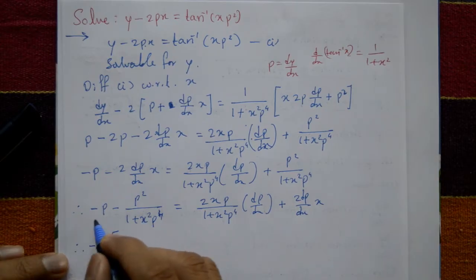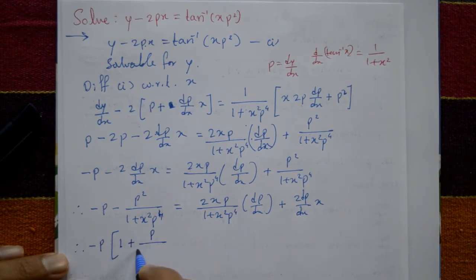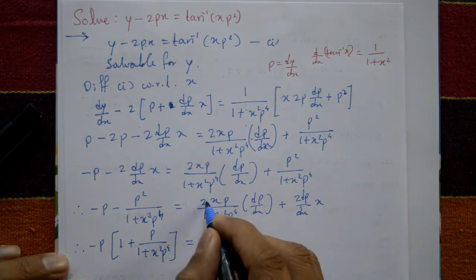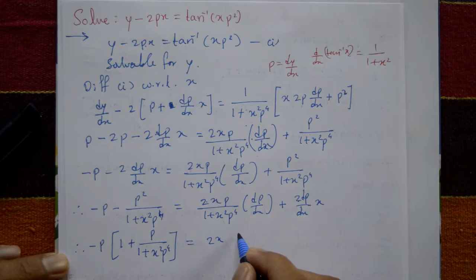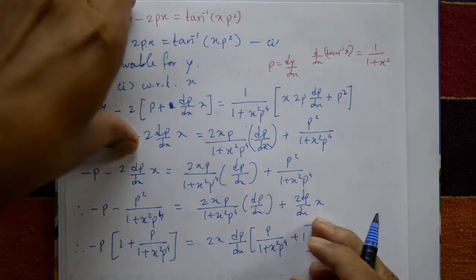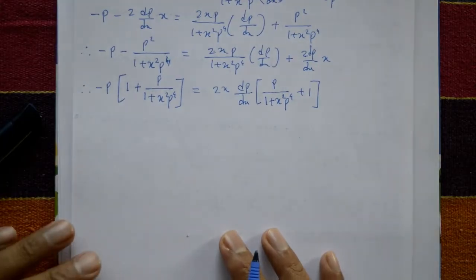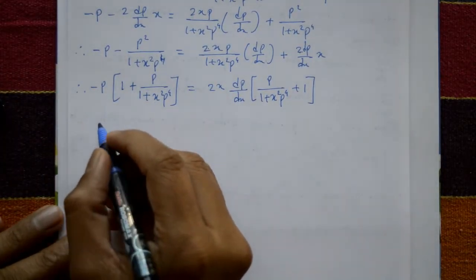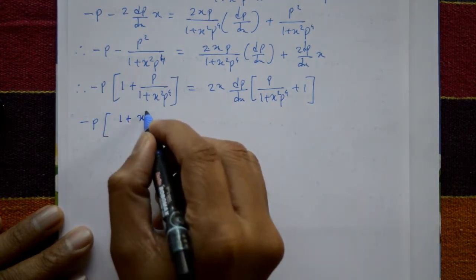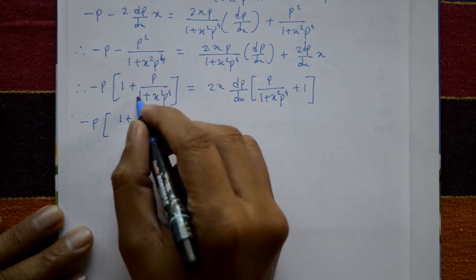Take minus p common on the left side: minus p times 1 plus p upon 1 plus x squared p raised to 4. On the right side, take 2x common: 2x times dp/dx times p upon 1 plus x squared p raised to 4 plus 1.